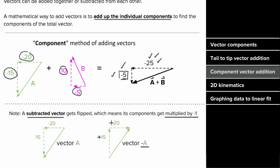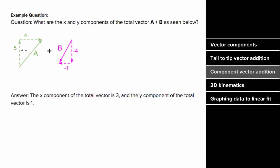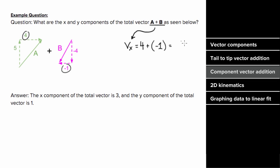What would an example of vector component addition look like? Say you have vectors a and b with given components and want to find the components of the total vector a plus b. To find the horizontal component, add the individual components: the horizontal component of a is four, plus the horizontal component of b, which is negative one, giving a total horizontal component of positive three.